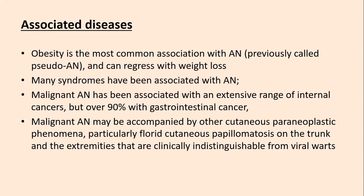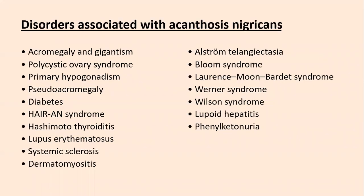Several syndromes and disorders are associated with acanthosis nigricans. Endocrinopathies include acromegaly and gigantism, polycystic ovarian syndrome, primary hypogonadism, pseudo-acromegaly, diabetes, HAIR-AN syndrome, and Hashimoto thyroiditis. Autoimmune disorders include lupus erythematosus, systemic sclerosis, and dermatomyositis. Congenital disorders include Bloom syndrome, Laurence-Moon-Biedl syndrome, Werner syndrome, Wilson syndrome, lupoid hepatitis, and phenylketonuria.